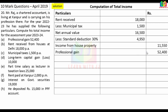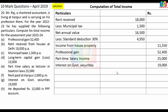Professional income: Rs.52,400. Income from other sources - part-time salary income: Rs.25,000. Interest on government security: Rs.19,000. Long-term capital loss set off.